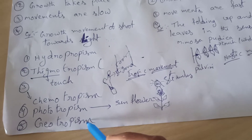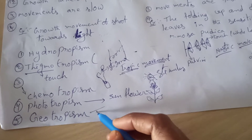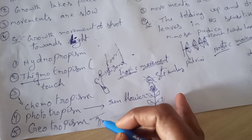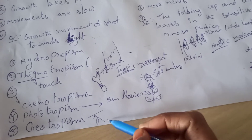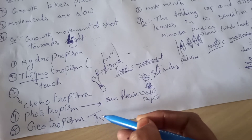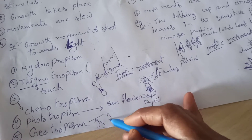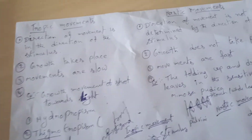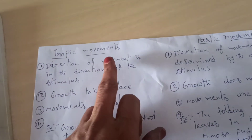Geotropism: gravitational force is the stimulus for root movement. The stimulus is gravitational force, and the movement is directed towards that force. These kinds of directional movements are called Tropic movements.